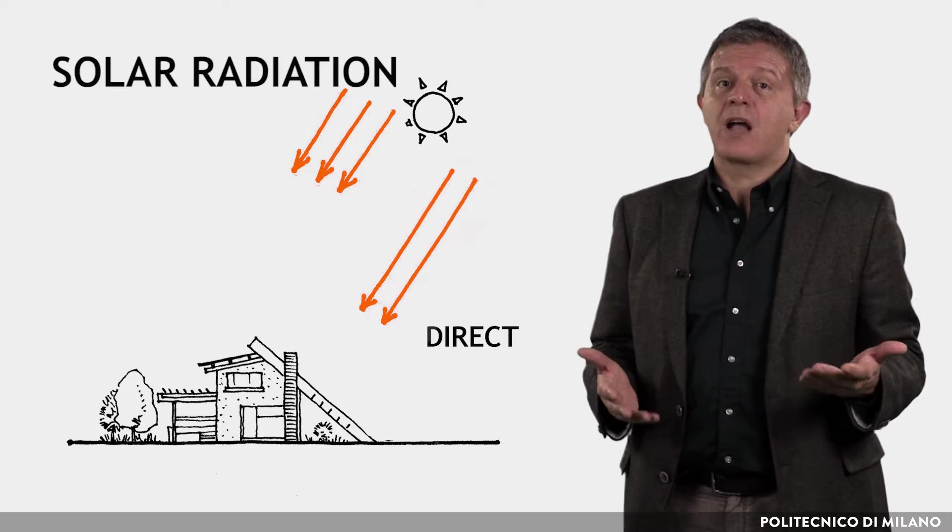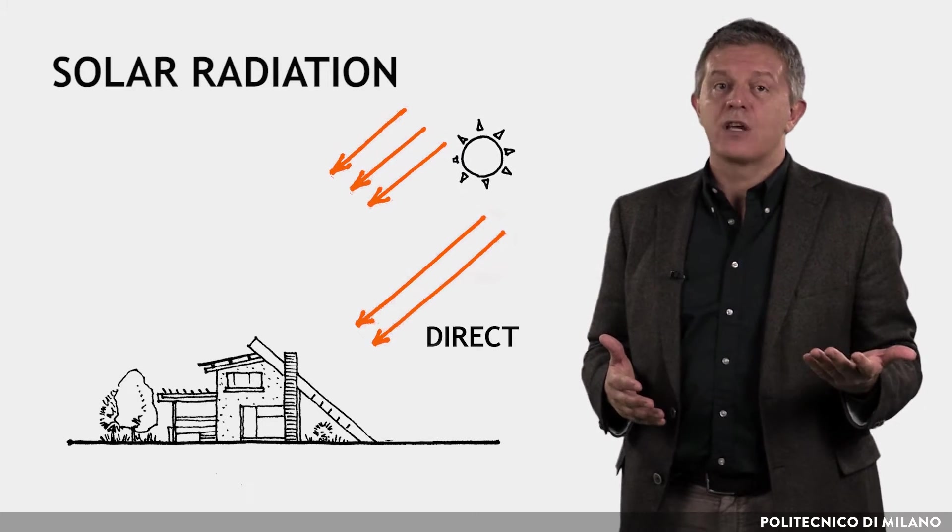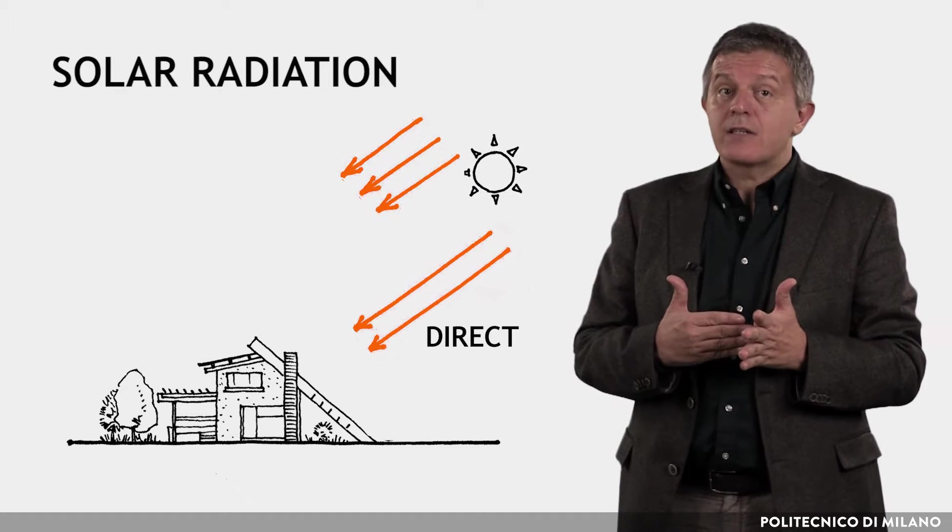The direct radiation, which comes straight from the sun, is influenced by the spatial disposition of the surface. The more perpendicularly the rays strike it, the higher the amount of collected radiation.